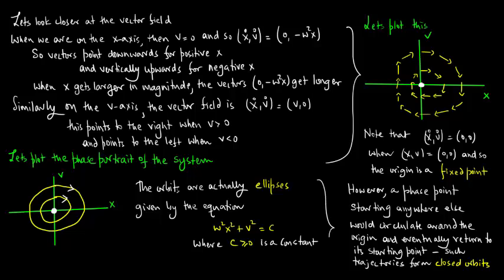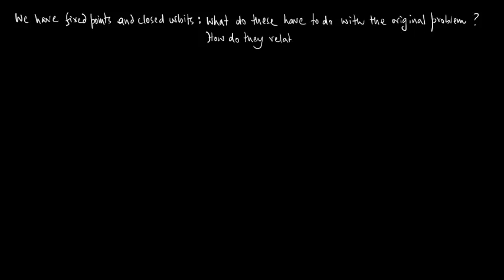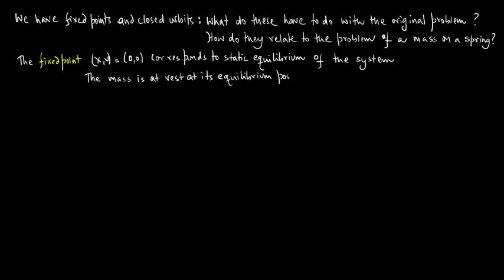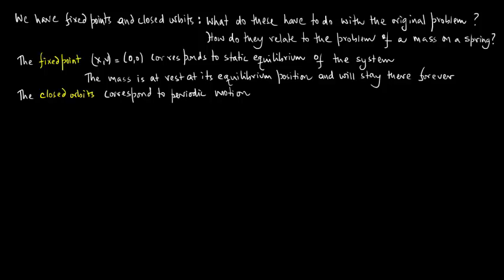The orbits are actually ellipses given by the equation omega-squared * x-squared plus v-squared equals C, where C is greater than or equal to 0 is a constant. Now we have fixed points and closed orbits, so the question is: what do these have to do with the original problem — how do they relate to the problem of a mass on a spring? The fixed point (x, v) equals (0, 0) corresponds to static equilibrium; the mass is at rest at its equilibrium position and will stay there forever. The closed orbits correspond to periodic motion. Let us try to visualize the dynamics.